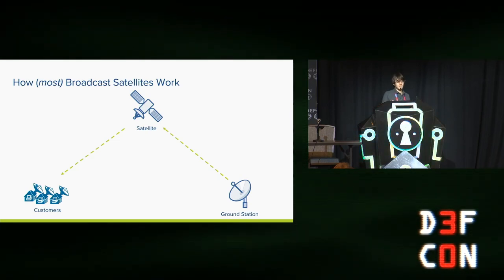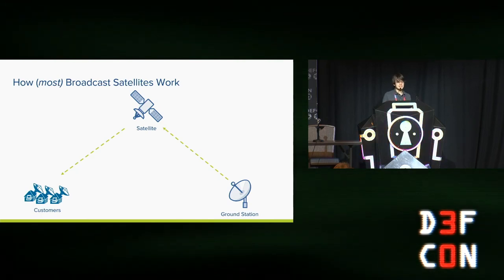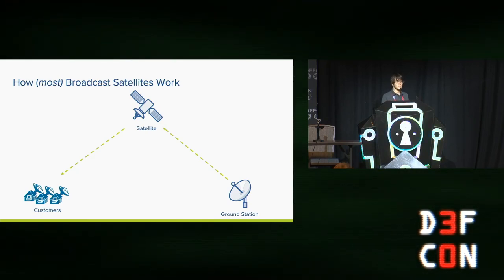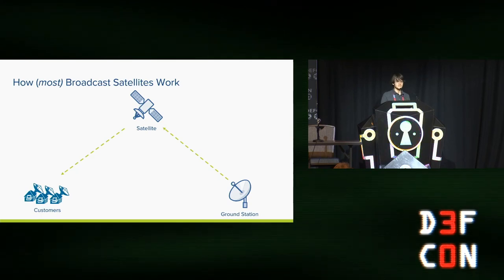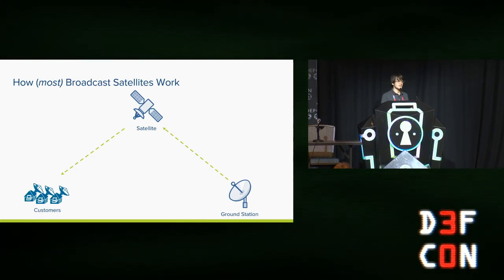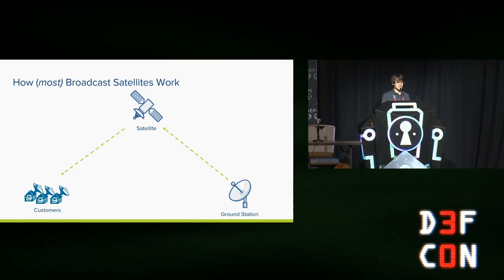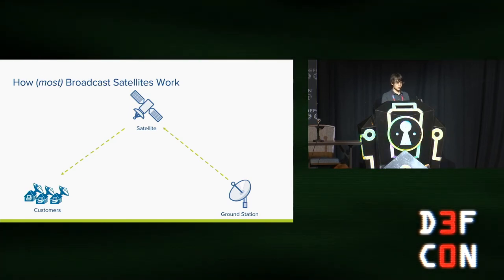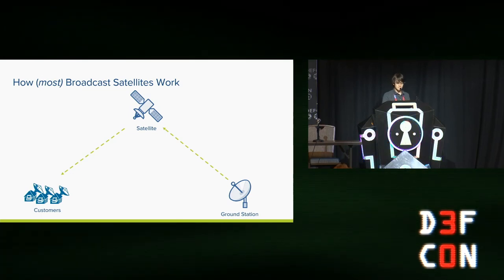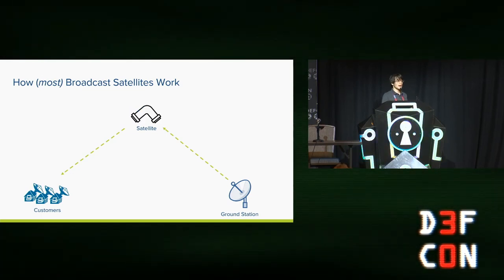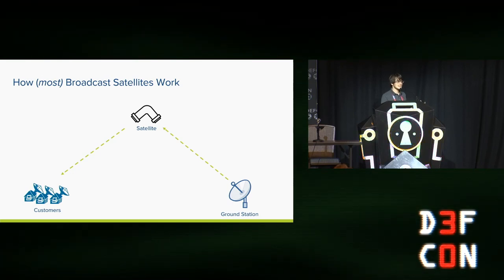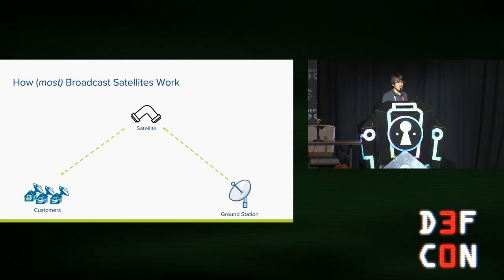Now, the important thing to know about these transponders is that they are very, very dumb. Satellites are expensive. You don't want them to break. And many of these are basically analog devices. If you send a message on the right frequency to a transponder in the right spot in orbit, it will dutifully relay that like a bent pipe. It just takes whatever comes in and sends whatever comes out.